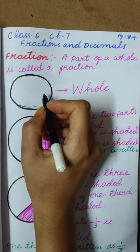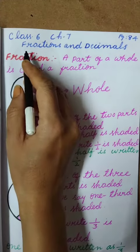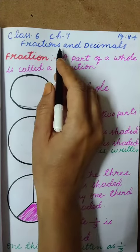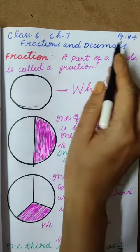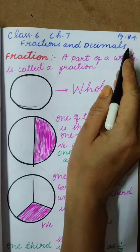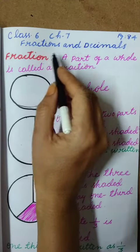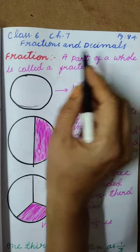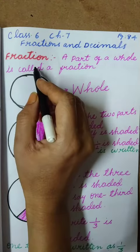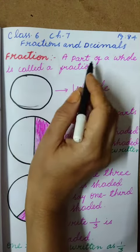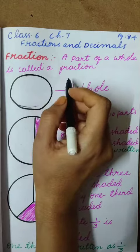Good morning children, today I am going to explain Class 6, Chapter 7, page number 84, Fractions and Decimals. What is a fraction? A part of a whole is called a fraction.